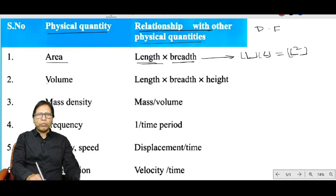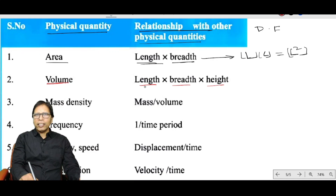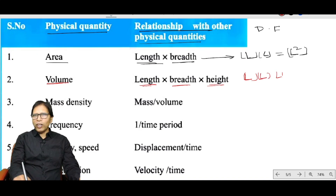Volume equals length × breadth × height, which is L × L × L, giving the dimensional formula of volume as L³.